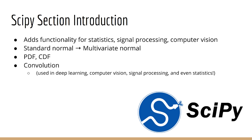First, we're going to look at how SciPy extends the statistical capabilities of NumPy. Previously, we looked at the standard normal, but in this section, we're going to look at the most general multivariate normal. It should be said that sampling from the multivariate normal is also now possible in NumPy, but this should still give you a good introduction for how SciPy can be used.